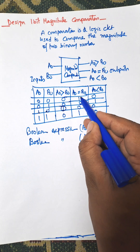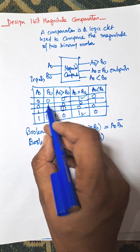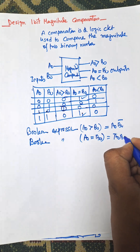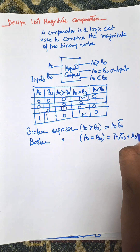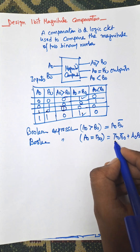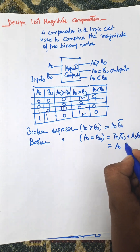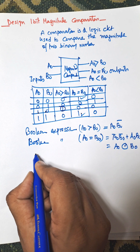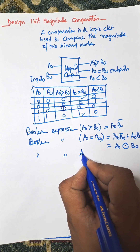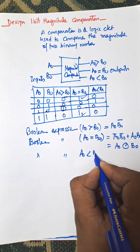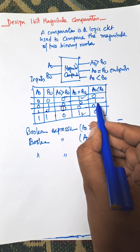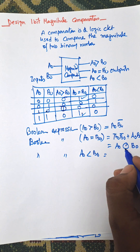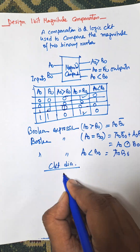Now the boolean expression for a0 equal to b0. There are two possible combinations that give output 1: a0-bar b0-bar and a0 b0. This is the XNOR gate — an XNOR operation between a0 and b0.